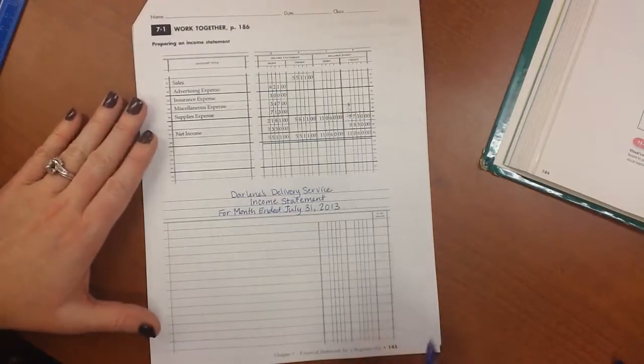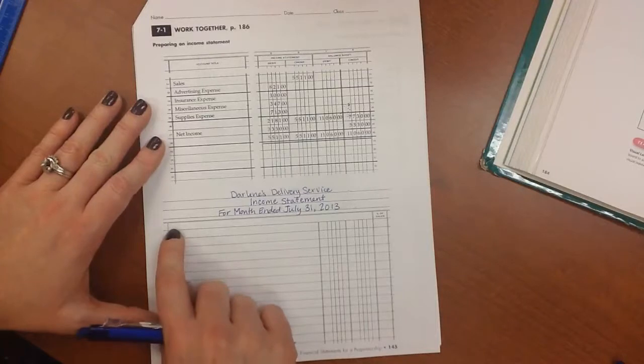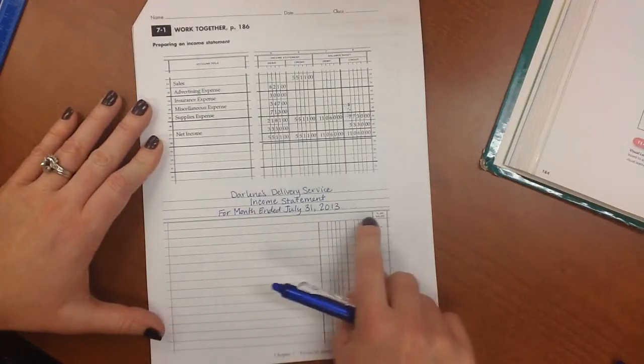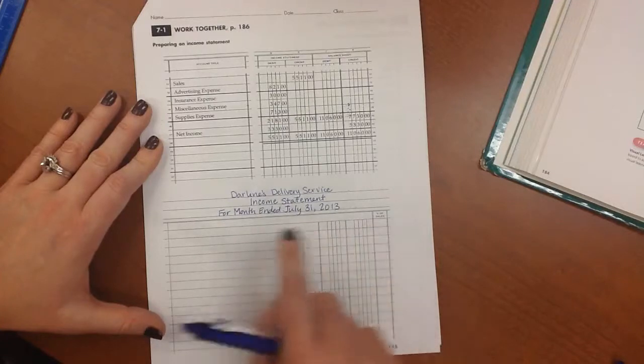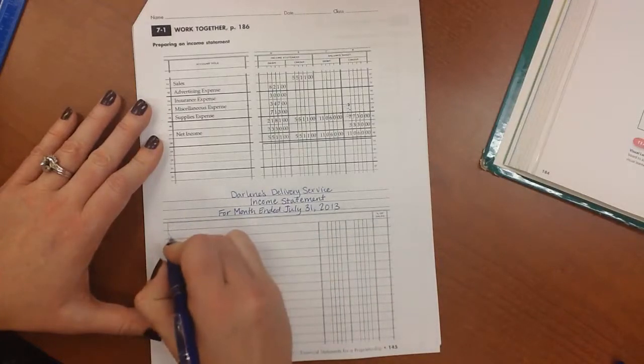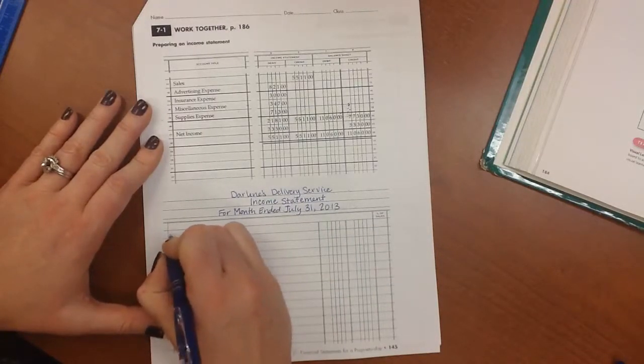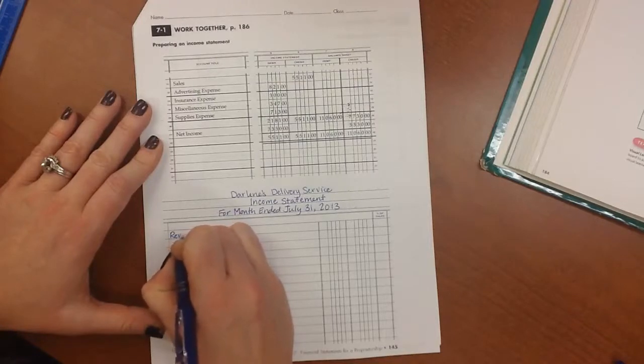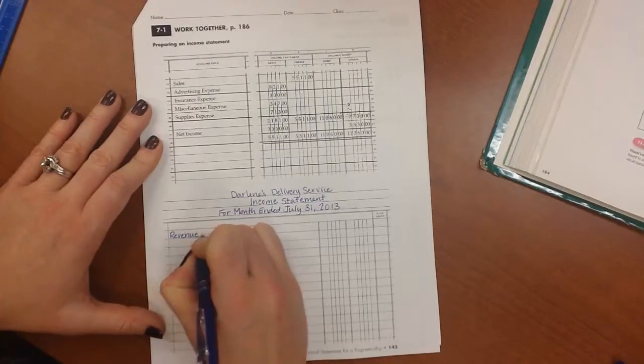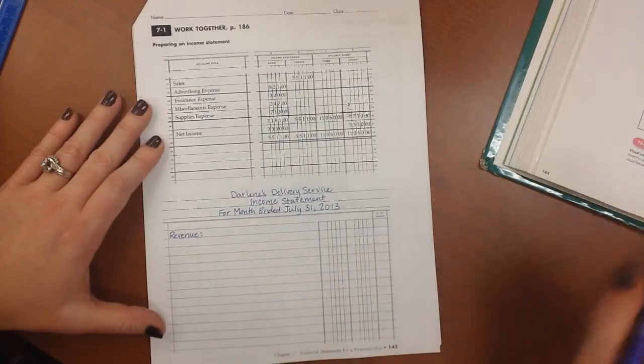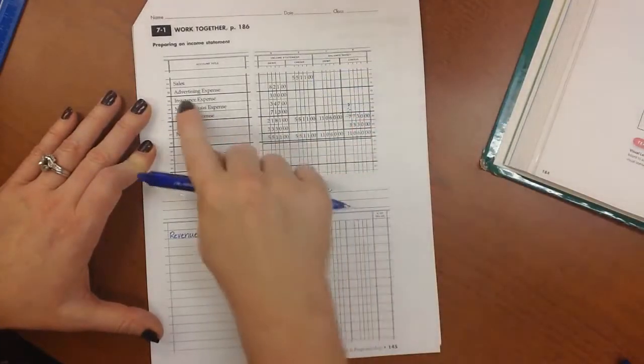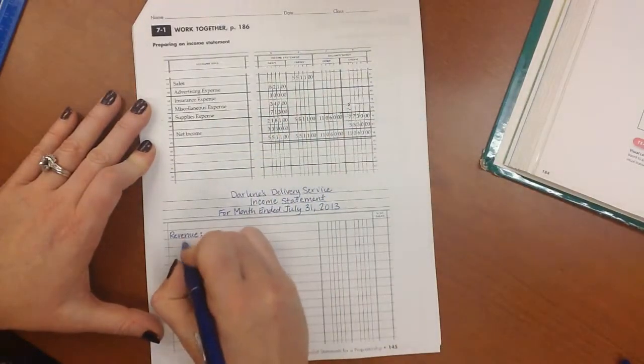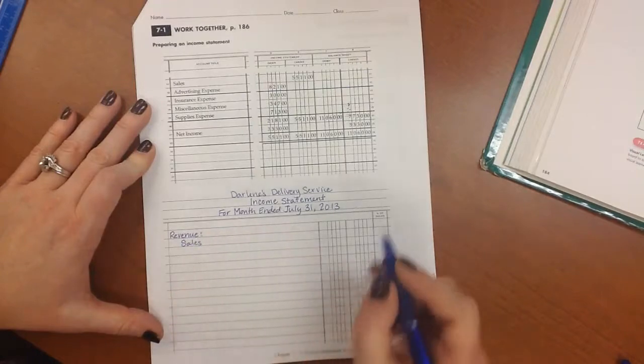So our first one is revenue and it's going to go on the top line. Now notice this very top line is just kind of a title bar, it's blank, it doesn't have any columns for us to write in. So we're going to skip that first one and actually go to the second line. And we put in the side heading of revenue and a colon. Then we are going to list all of our revenue accounts. The only revenue account we have is sales. So we're going to put sales and notice that is indented just a little bit.